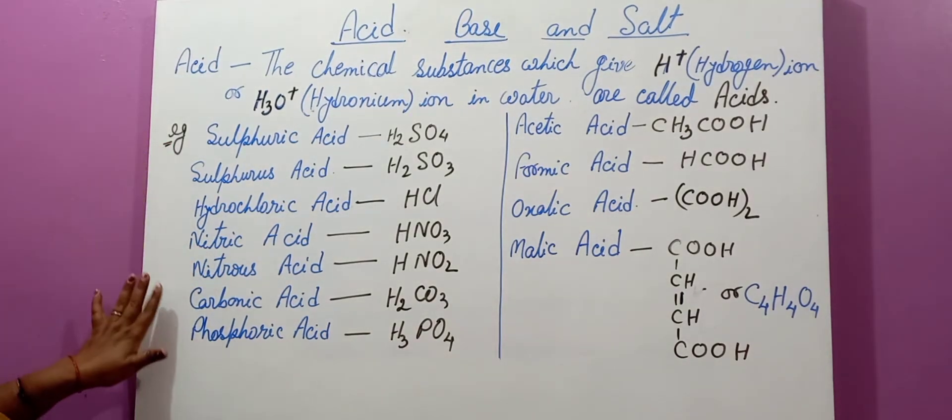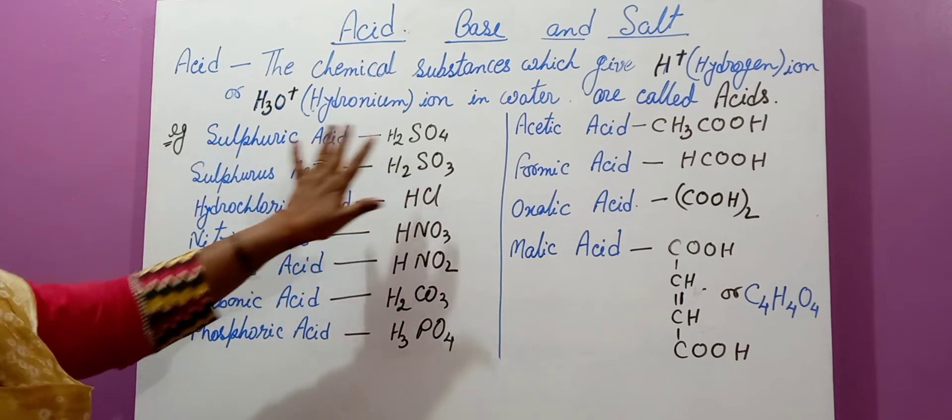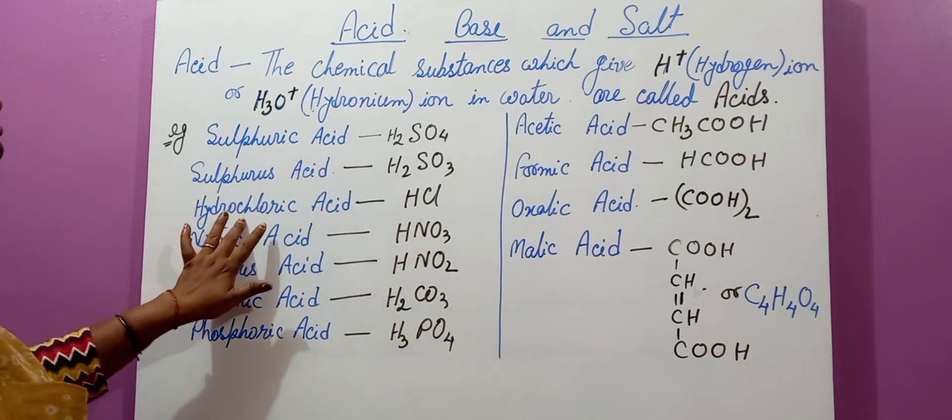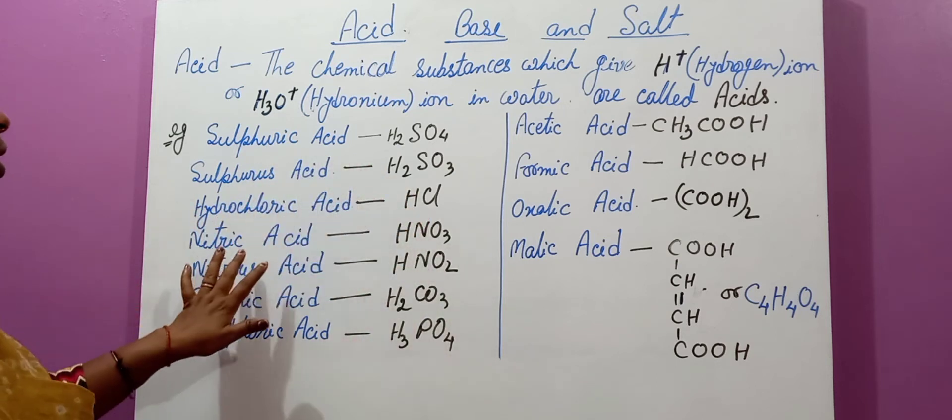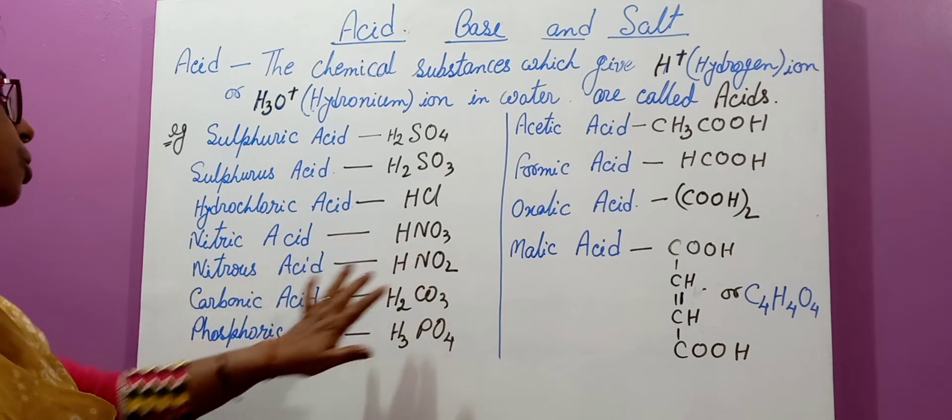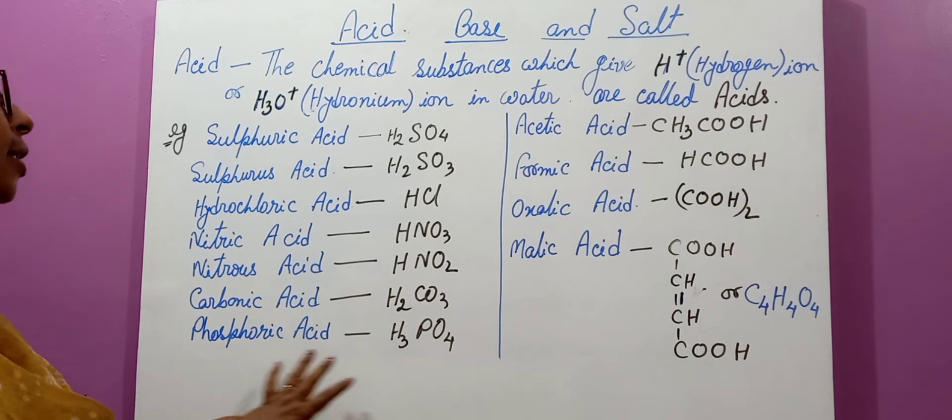There are some examples of acids like sulfuric acid, the formula is H2SO4. Sulfurous acid like H2SO3. Hydrochloric acid like HCl. Nitric acid like HNO3. Nitrous acid like HNO2. Carbonic acid like H2CO3. Phosphoric acid like H3PO4.